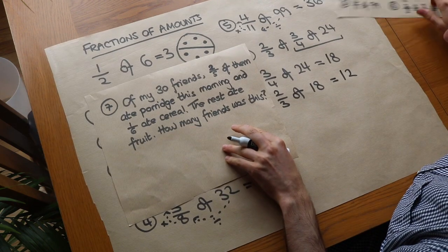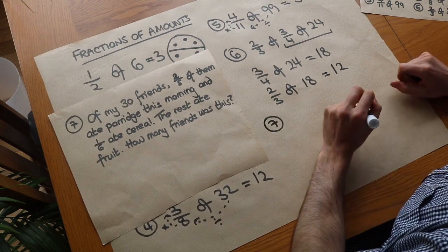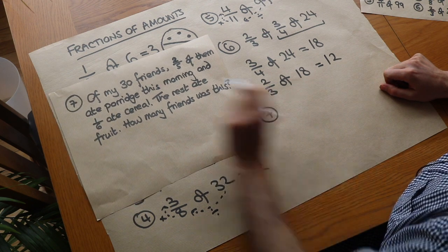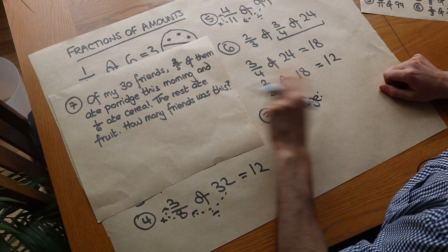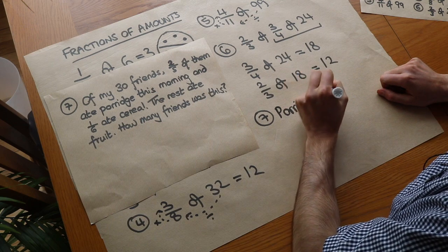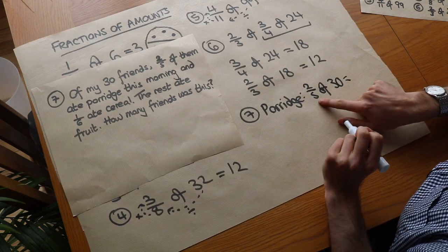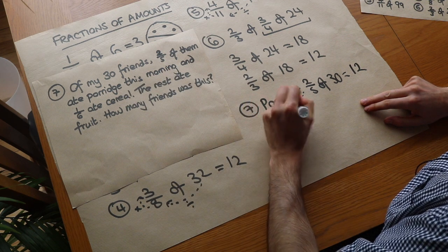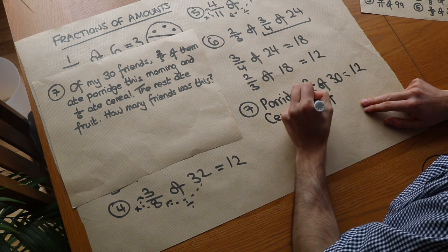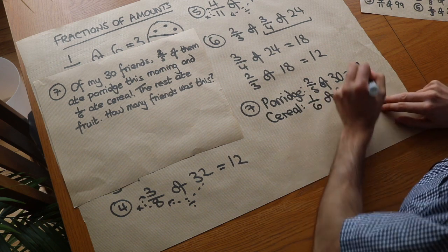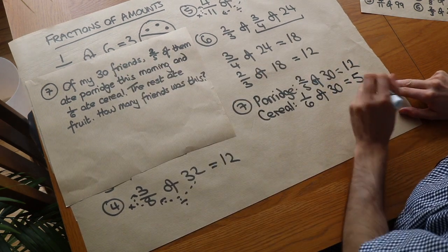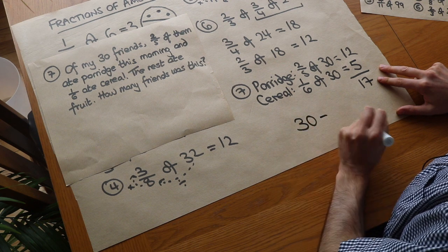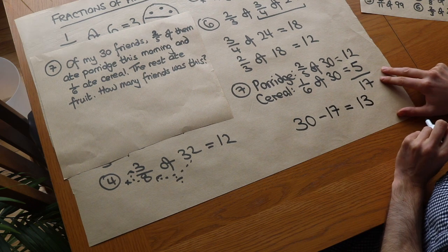Let's finish with a word problem. Of my 30 friends, two fifths ate porridge this morning and a sixth ate cereal. The rest ate fruit — how many friends was that? For porridge: two fifths of 30, so 30 divided by 5 is 6, multiplied by 2 is 12. For cereal: a sixth of 30, so 30 divided by 6 is 5. That's 12 plus 5, which is 17 who ate cereal or porridge. So 30 subtract 17 means 13 people ate fruit.